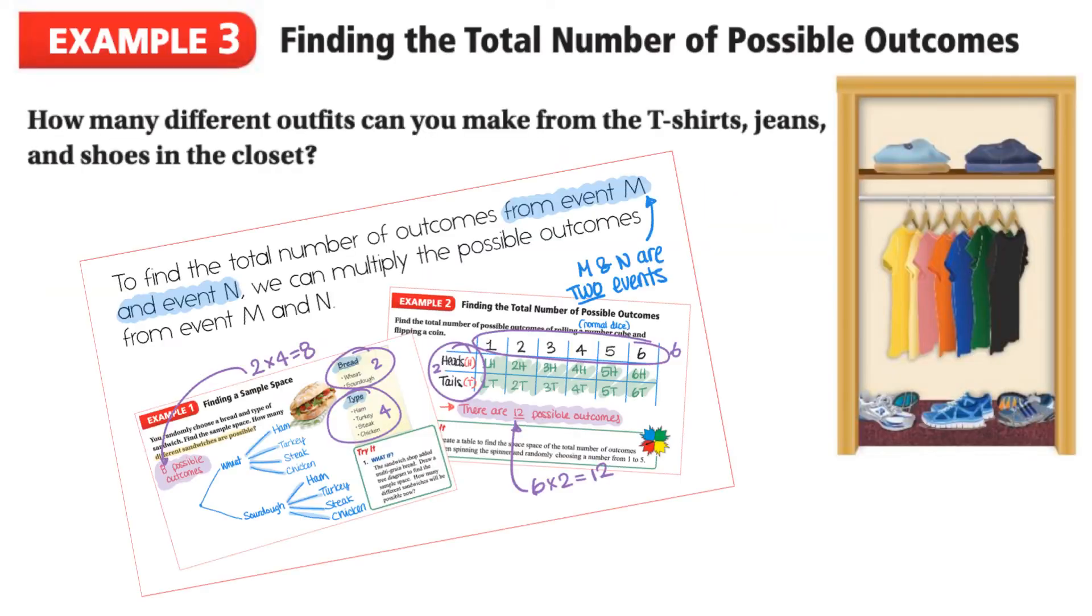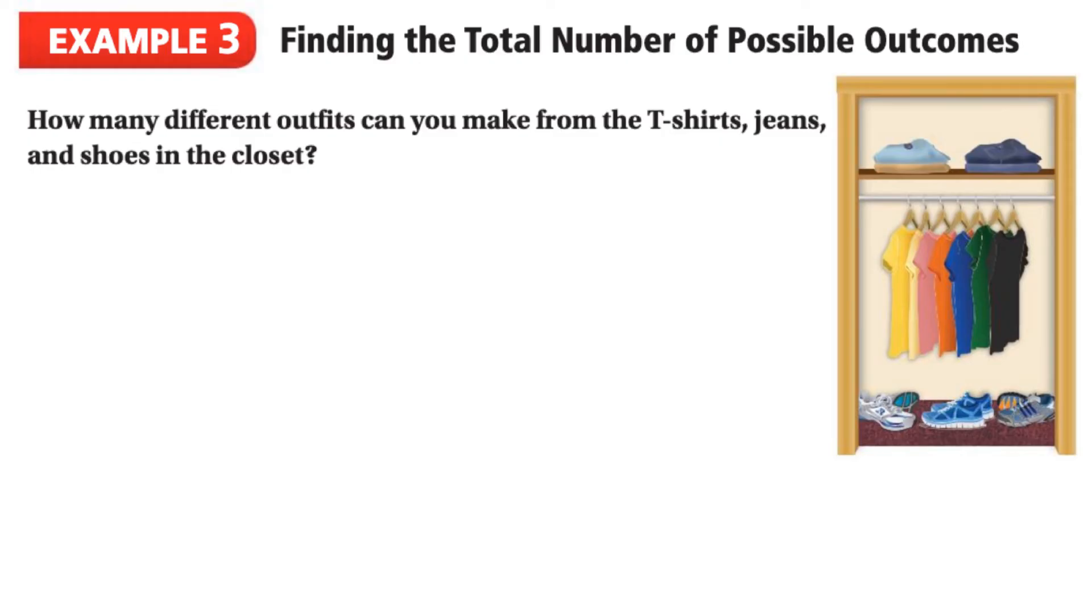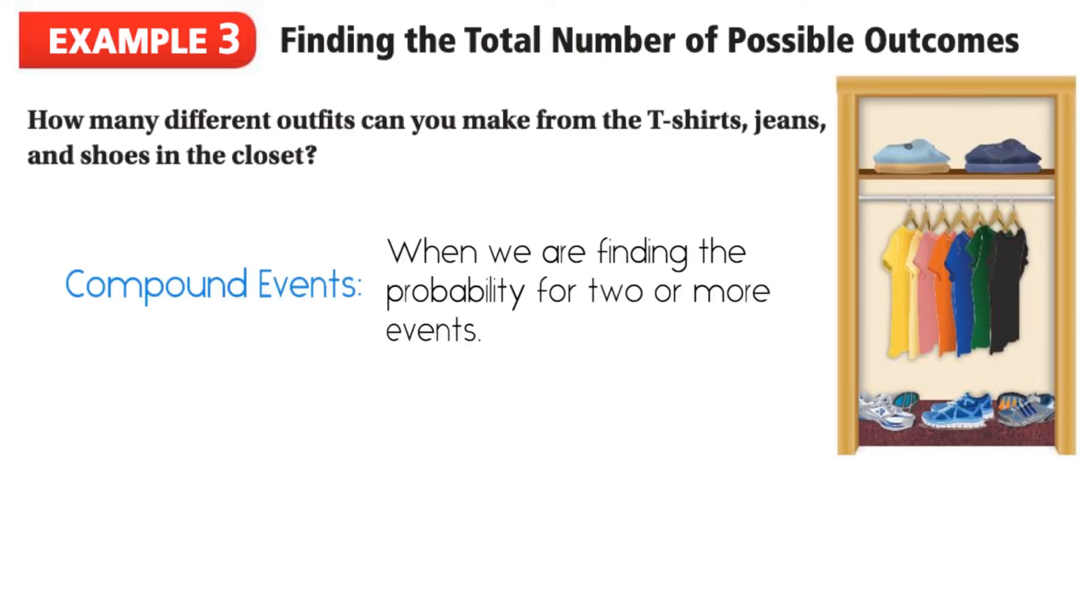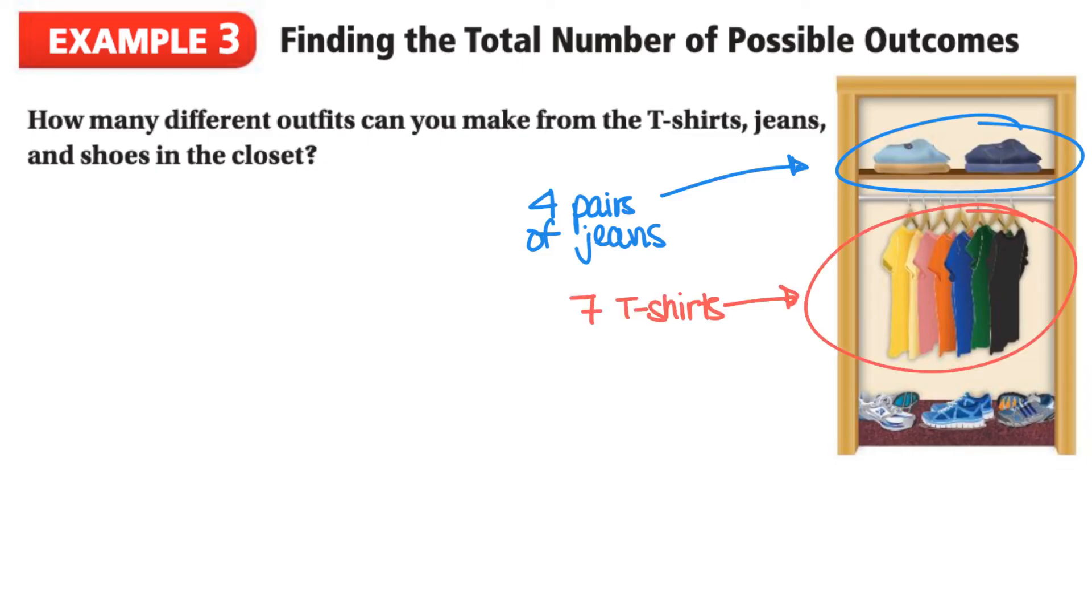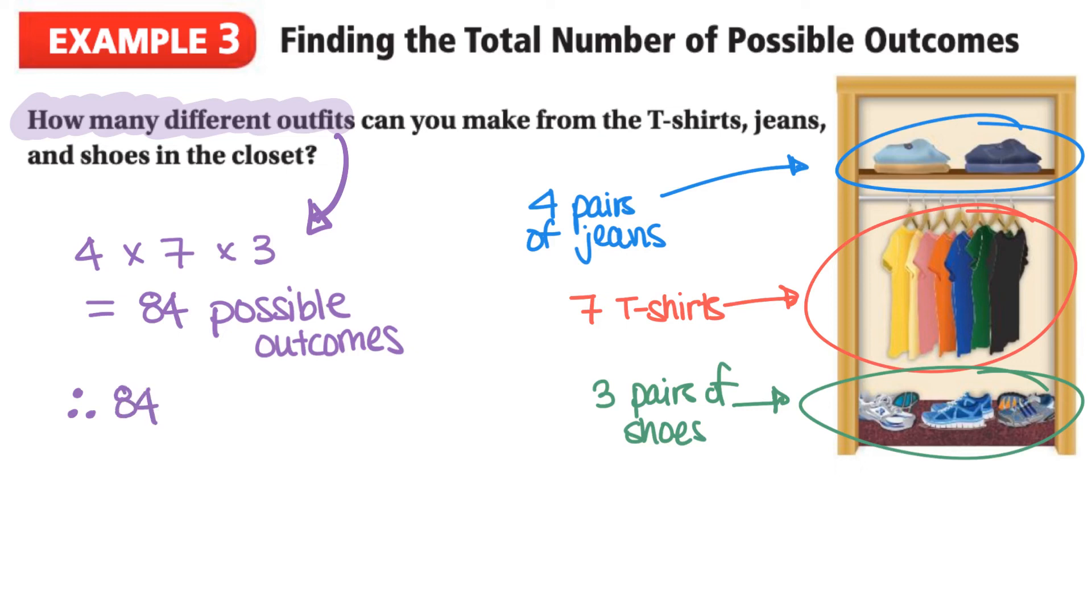In our third example, let's use that quick method that we just talked about to determine the total number of possible outcomes. This question says, how many different outfits can you make from the t-shirts, jeans, and shoes in the closet? Remember, compound events can occur from two or more events. Since we're looking at three different items of clothing, we have three different events. If we look in the closet, we can see that there are four different jeans, so four outcomes. There are seven different t-shirts, so seven outcomes. And we have three different pairs of shoes, so that's three outcomes. Now we can multiply the possible outcomes for each event: the jeans, the t-shirts, and the shoes. This gives us four times seven times three, which is equal to 84 possible outcomes, and therefore there are 84 different outfits.